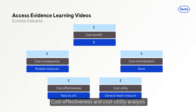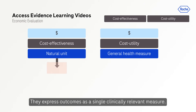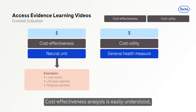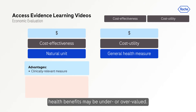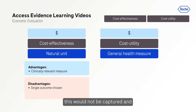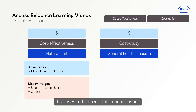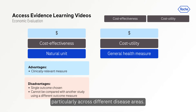Cost-effectiveness and cost-utility analysis are the most commonly used types of economic evaluation in health care, expressing outcome as a single clinically relevant measure. In cost-effectiveness analysis, outcome is expressed in terms of an effect common to the interventions being compared, measured in a natural unit. It is easily understood because it uses a clinically relevant measure of outcome. However, because only one outcome is chosen, health benefits may be under- or overvalued. For example, if life years gained were chosen as the outcome measure but there was also a big difference in side effects affecting quality of life, this would not be captured. Also, results from one analysis cannot be compared with another that uses a different outcome measure, making it difficult for decision makers to choose between spending options across different disease areas.